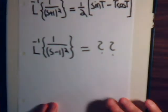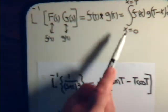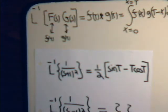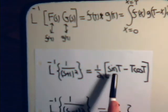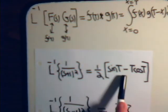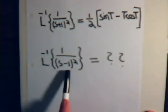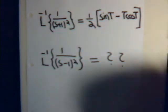Now in the last video, in example number three, using this equation we determined that the inverse Laplace transform of 1 over s plus 1 squared is one half sine of t minus t times the cosine of t. Suppose we have 1 over s minus 1 squared — now we want the inverse Laplace transform. So let's go ahead and see if we can figure this out.